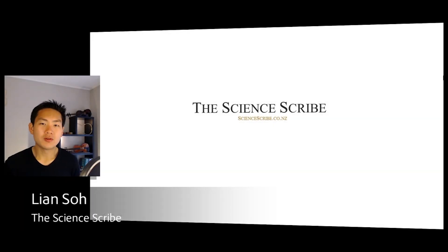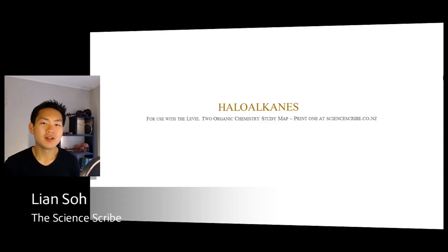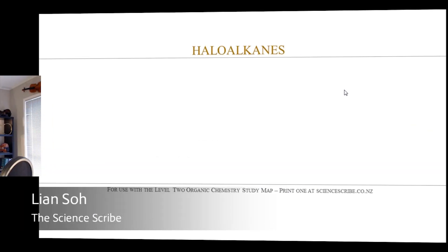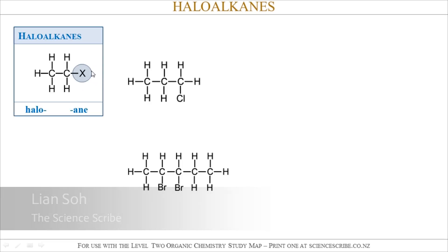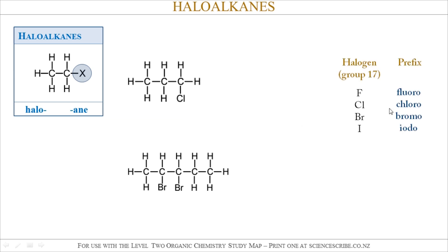In CEA Level 2 organic chemistry, let's talk about haloalkanes. Haloalkanes are all organic molecules which contain at least one halogen atom. Here are two examples. Halogen atoms are pretty much your group 17 elements.